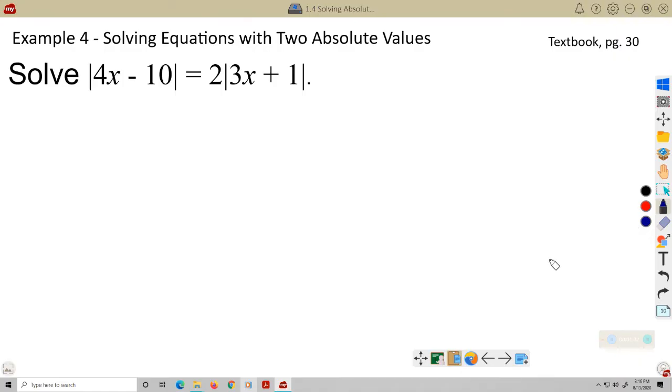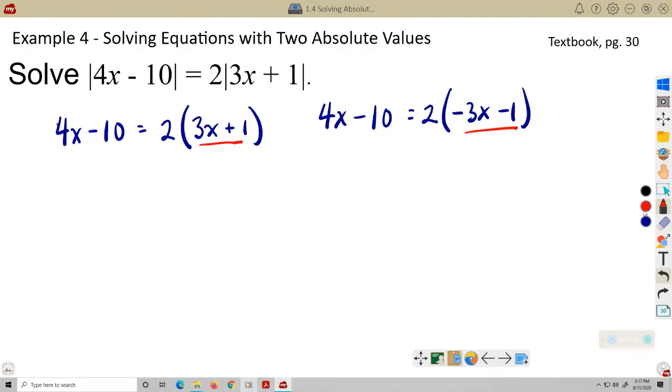Well, I'm going to write a couple cases here, and the first is going to be 4X minus 10 is equal to 2, and this is the positive case. My second case, my negative case: 4X minus 10 equals 2 times negative 3X minus 1. I took the opposite of both things in there. So this expression and this expression are dead opposites.